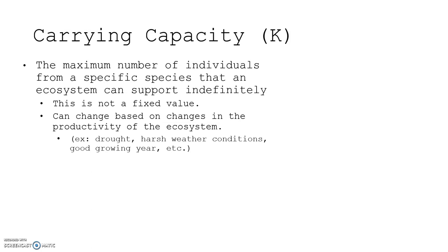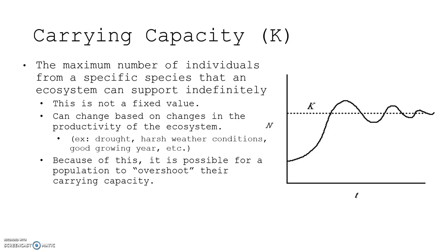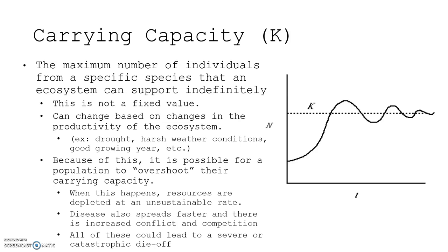Because of this, it's possible for a population to overshoot their carrying capacity, which is quite common — you have almost too many and then they die off, going below the carrying capacity. They grow back up and then die back off again. When this happens, resources are depleted at an unsustainable rate. Disease can also spread faster and there's increased conflict due to competition, and all of these could lead to a severe or catastrophic die-off.